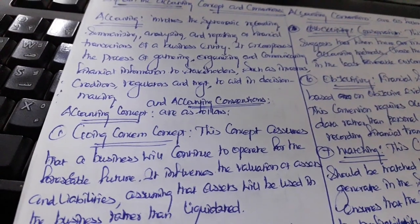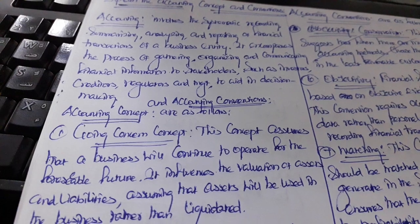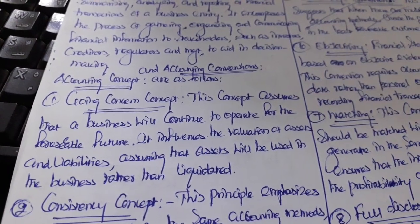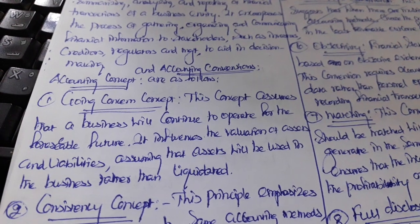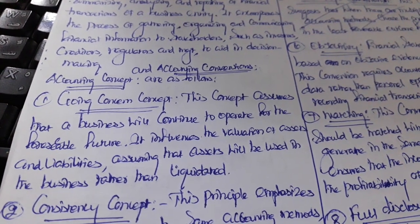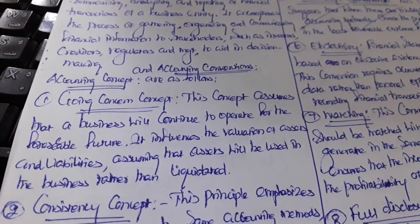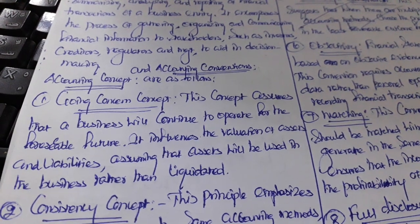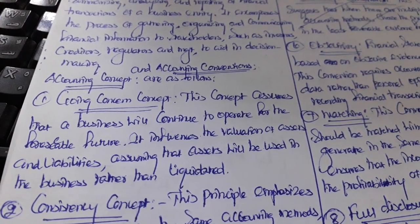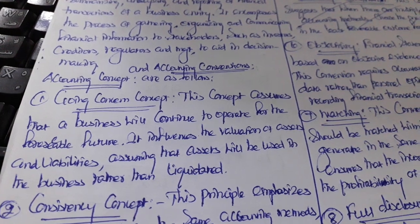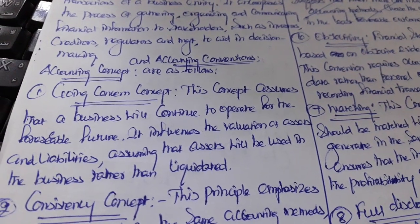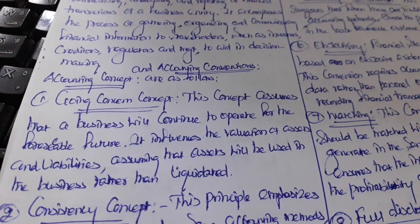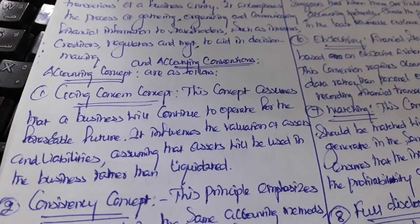Next, accounting concepts and accounting conventions are as follows. The first concept is the going concern concept. This concept assumes that a business will continue to operate for the foreseeable future. It influences the valuation of assets and liabilities, assuming that assets will be used in the business rather than liquidated. The going concern concept means the business will continue and never end.